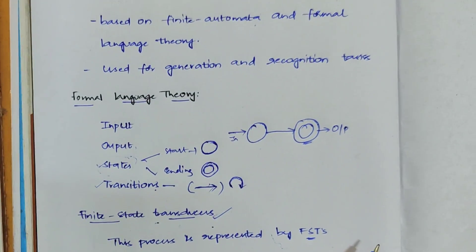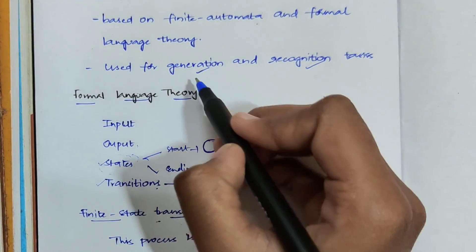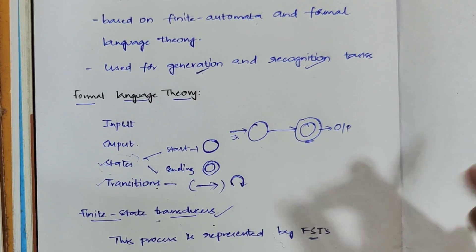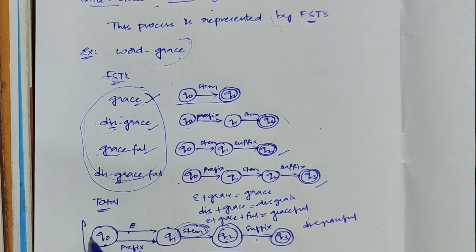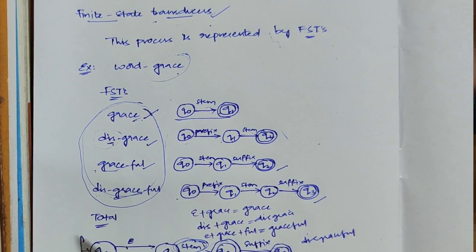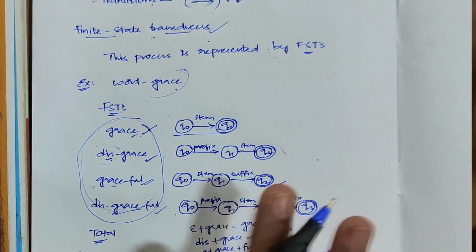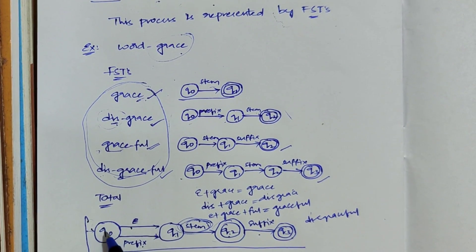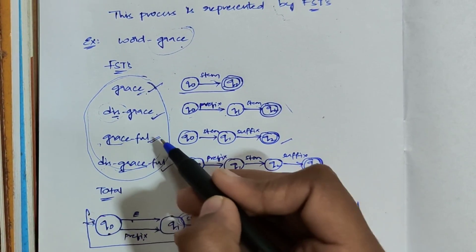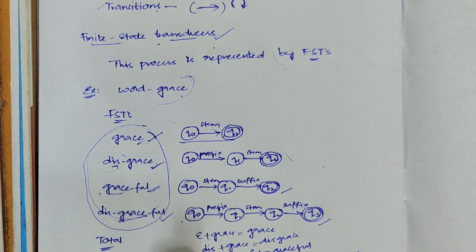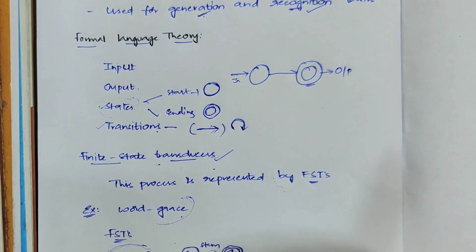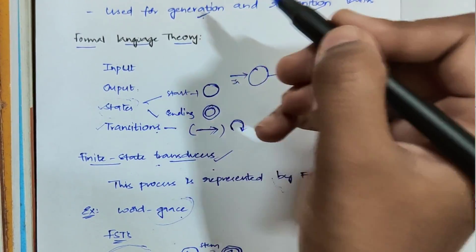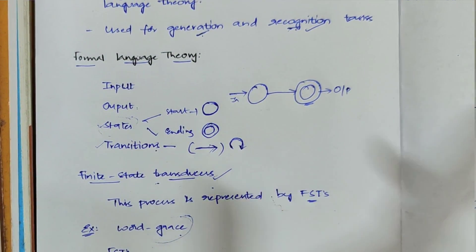Now, what are generation and recognition tasks? Generation means whenever you give a word to the finite automata, you get new words as output. For example, if you give 'grace' as input, it may output 'disgrace', 'graceful', or 'disgraceful'. That is the generation task. Recognition is the opposite: whenever you give input as 'disgrace', 'graceful', or 'disgraceful', it gives you the output 'grace'. It recognizes the base word from whatever word you give it. Generation creates new words by adding prefixes or suffixes; recognition finds the base word.